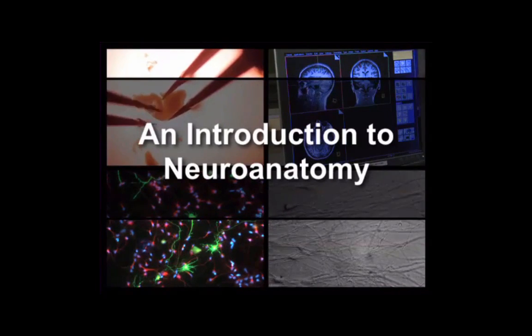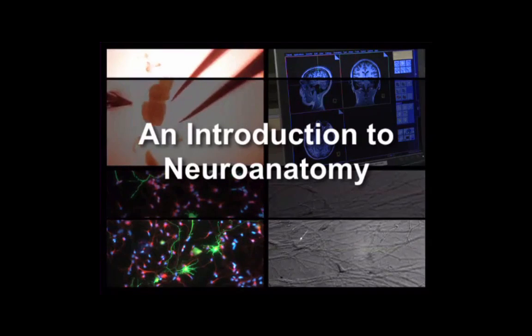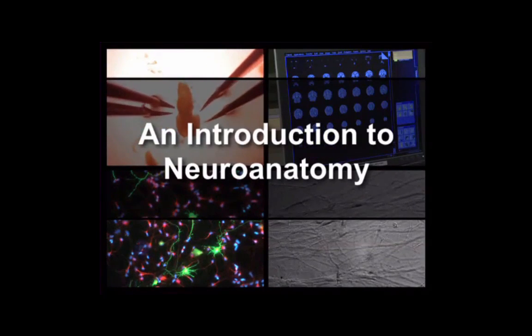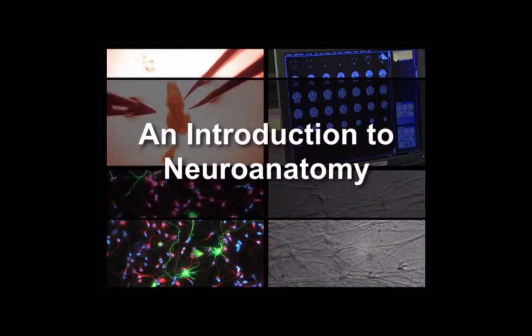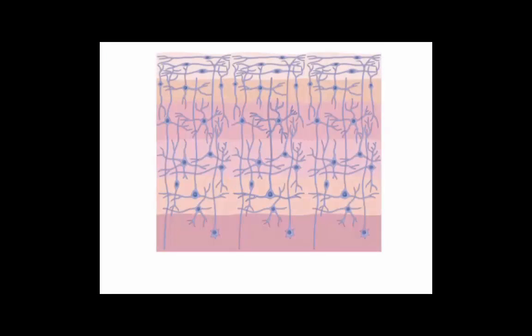Through the study of neuroanatomy scientists attempt to draw a map to navigate the complex system that controls our behavior. On the microscopic level, neuroanatomists investigate the relationships between signaling cells known as neurons, maintenance cells known as glia and the extracellular matrix structure that support them.